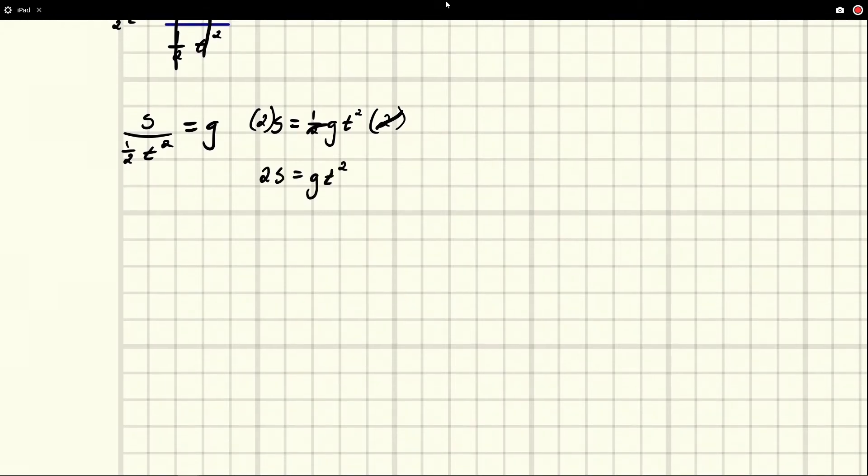And then we can divide by t squared on both sides. And we get 2s over t squared equals g.